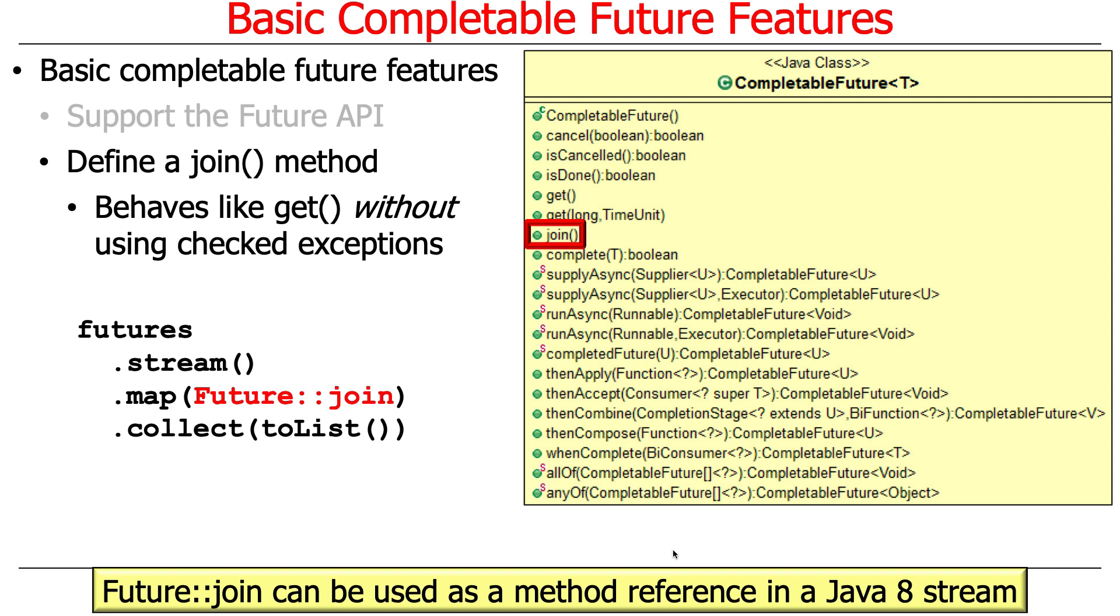So join behaves like get, except it doesn't use checked exceptions. It uses so-called runtime exceptions. Runtime exceptions are nice because you don't have to syntactically clutter your code with try-catch blocks to catch a runtime exception.